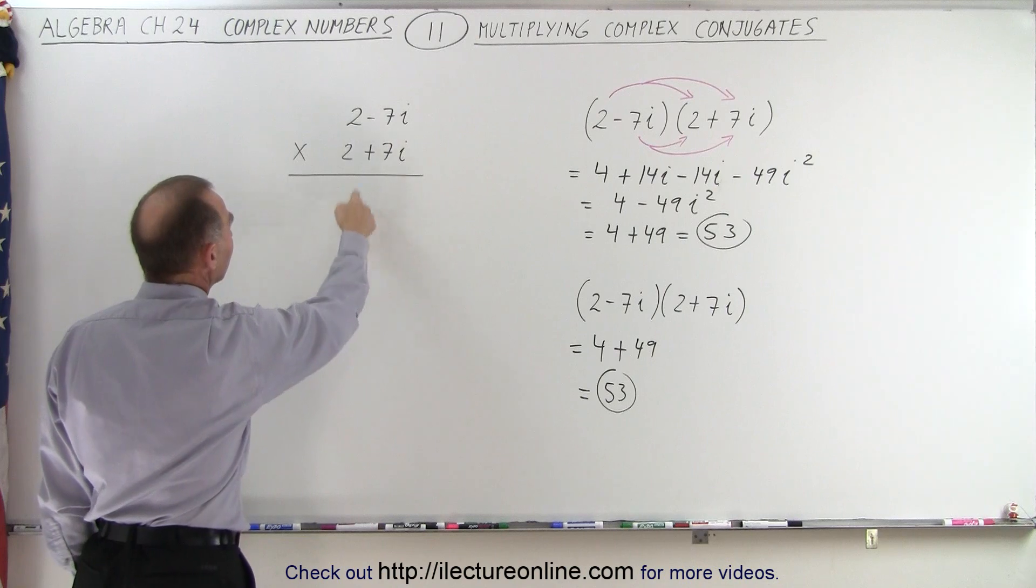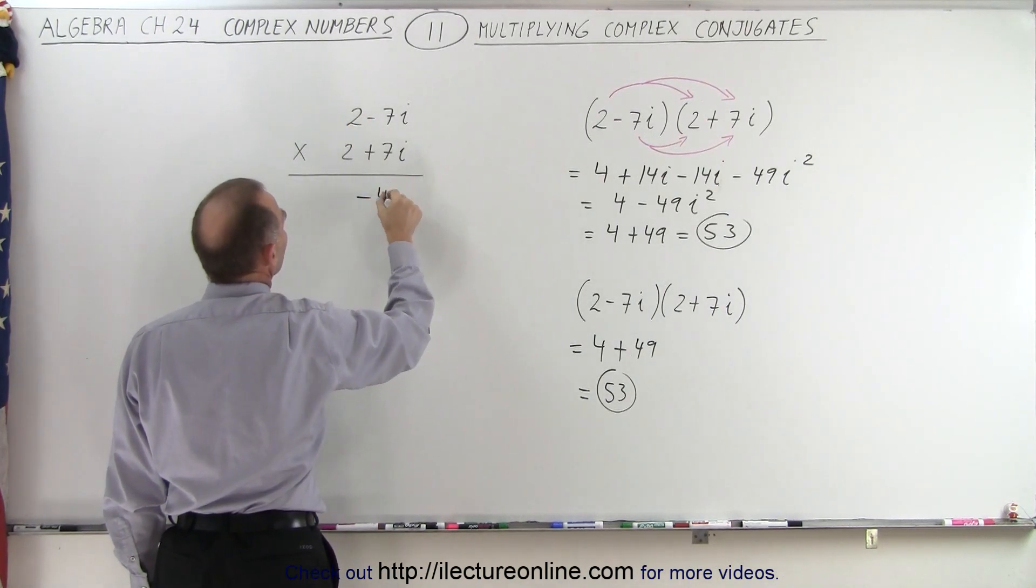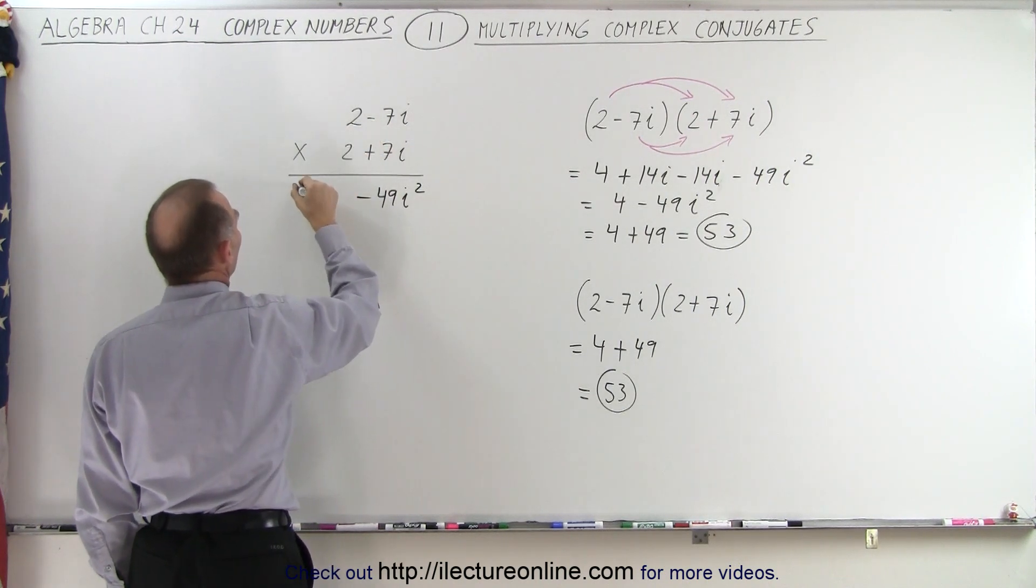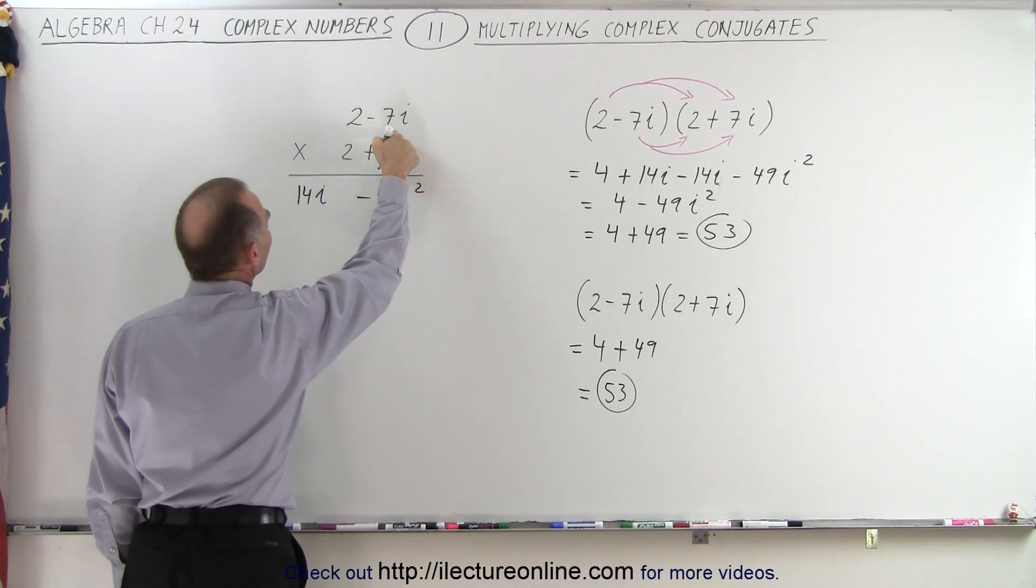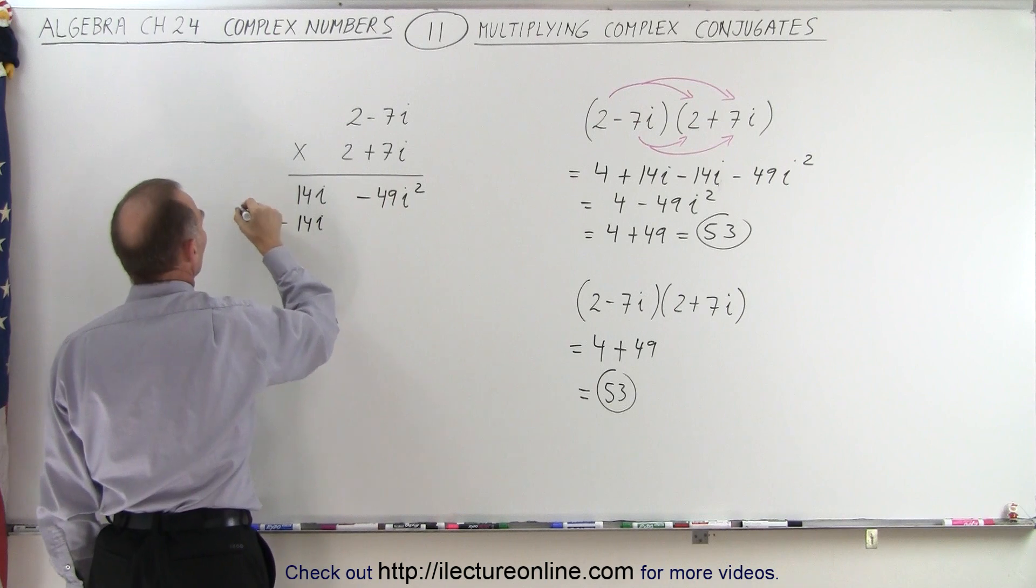Over here, we can do it like this in a vertical direction. 7i times negative 7i gives us minus 49i squared. 7i times 2 gives us plus 14i. 2 times negative 7i gives us negative 14i. And 2 times 2 gives us 4.